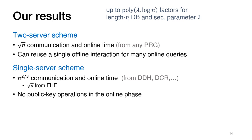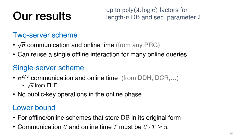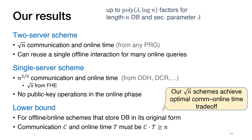A drawback of our single-server scheme is that, unlike the two-server scheme, it requires a separate execution of an offline phase before each query. Finally, we give a lower bound for offline-online PIR schemes in this model, where the servers need to store the database in its original form. Specifically, we show that the product of the communication C and the online time T must be at least linear in the database size. This matches our two-server scheme and the FHE-based single-server scheme, and this lower bound holds even in the computational setting.